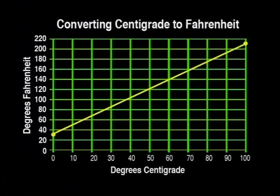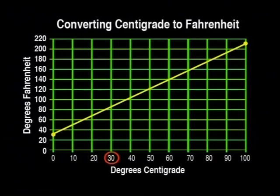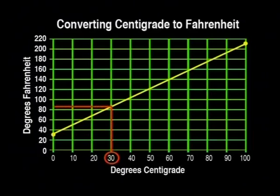Now we can use this graph to convert between temperatures given in centigrade or in Fahrenheit. For example, if I want to see what 30 degrees centigrade is in Fahrenheit, I find 30 on the centigrade axis, go straight up to the line, and then go across to the Fahrenheit axis and get to 86. So 30 degrees centigrade is the same as 86 degrees Fahrenheit.